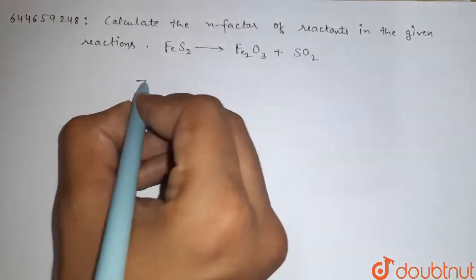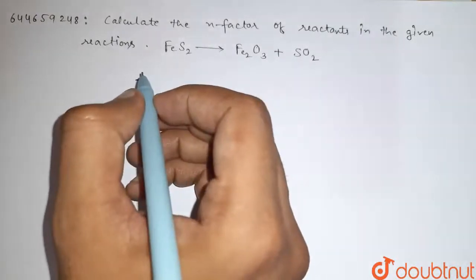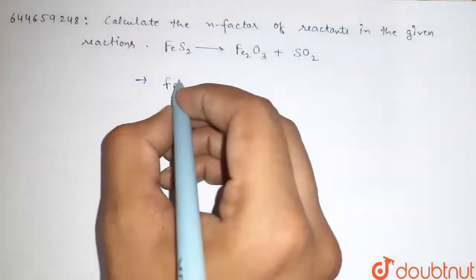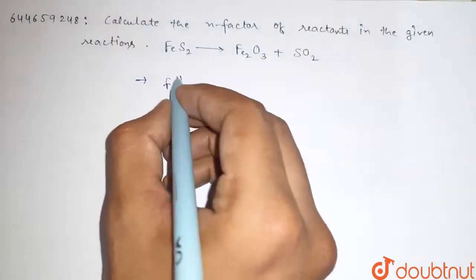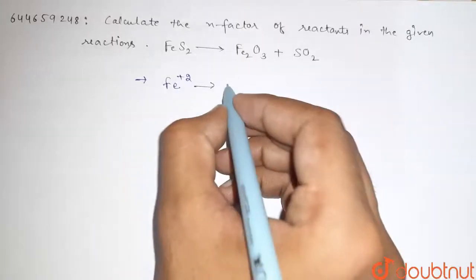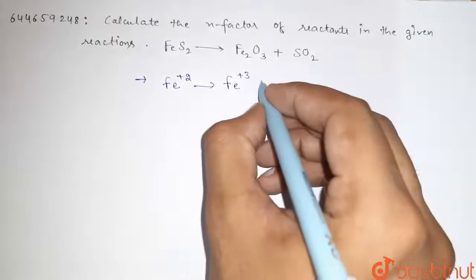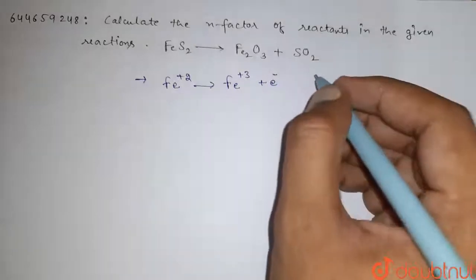So guys, we know that the n-factor is the number of electrons released. Initial oxidation state of iron is +2, goes into Fe +3, plus 1 electron is released.